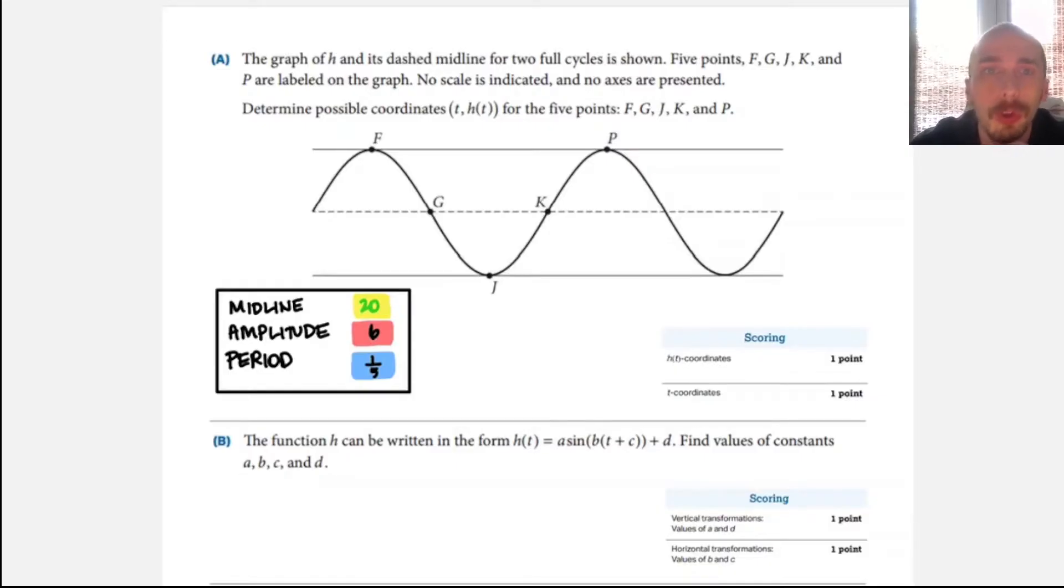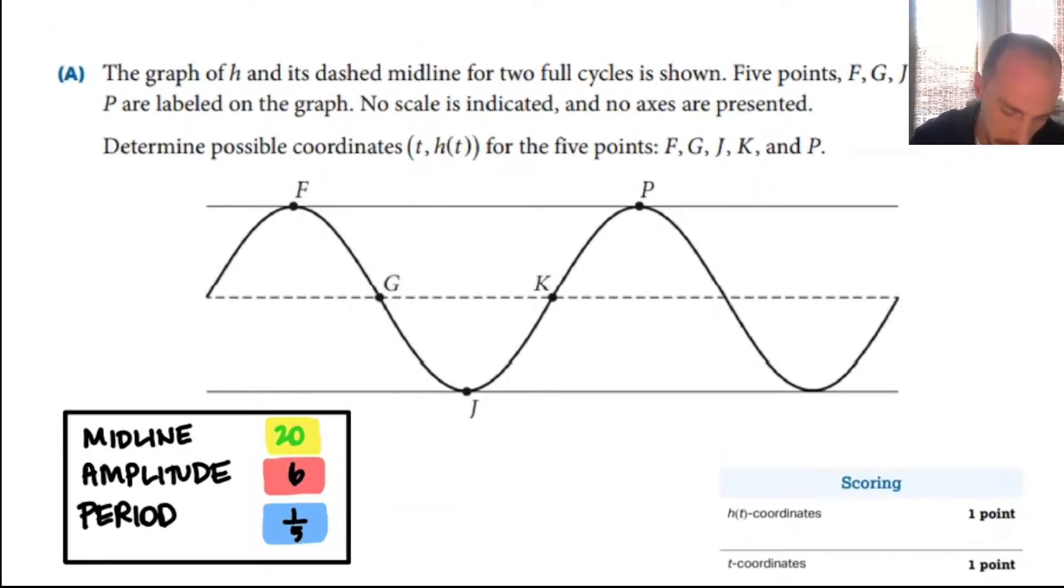All right, so I'll bring that with me and we'll look at the questions they're going to ask you. So every time on part A of number three, they're going to give you a picture of a graph of a sinusoidal function. No scale or axes will be presented. And they'll have these five labeled points, F, G, J, K, and P. We just need to determine possible coordinates for each of the five points. And you can see down below in part B, they're going to ask us to write a formula for it, but they're kind of really only asking for the constants because it's sinusoidal context.